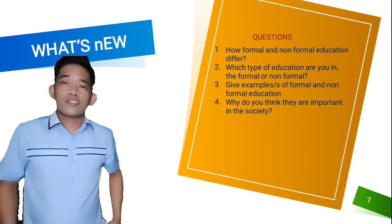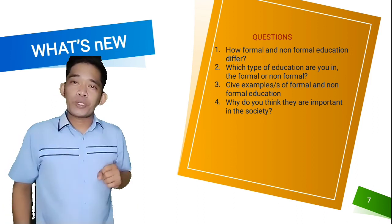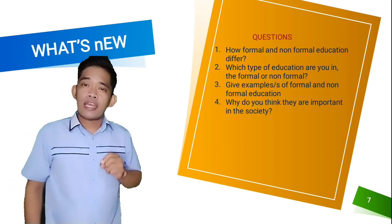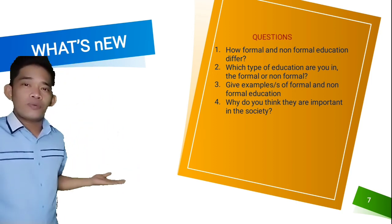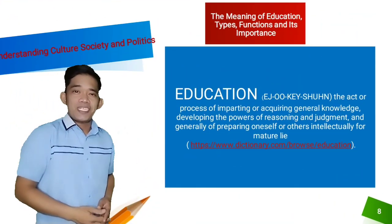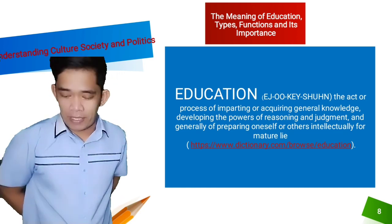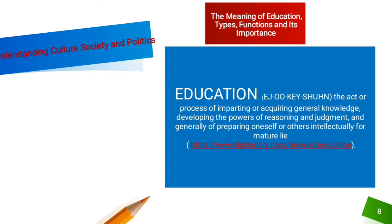As we go along with our discussion, kindly bear in mind the following questions, because we are going to talk about the distinction between formal and non-formal education. In this part of the video, we give you something to read to deepen your understanding about the topic: The Meaning of Education, Types, Functions, and Its Importance. Education — the act or process of imparting or acquiring general knowledge, developing the powers of reasoning and judgment, and generally preparing oneself or others intellectually for mature life, according to Dictionary.com.